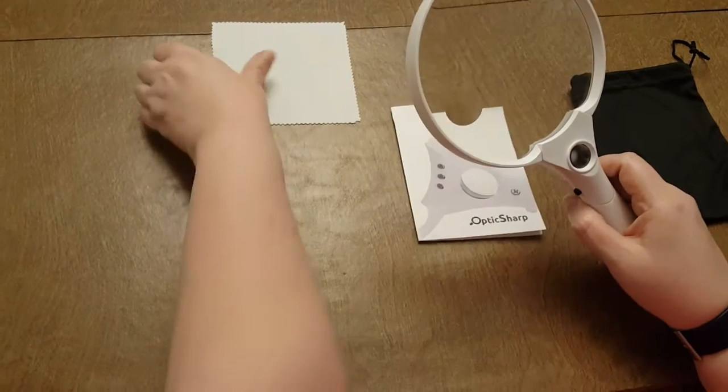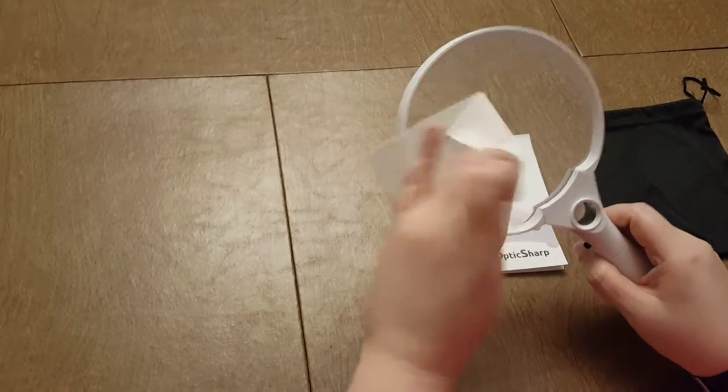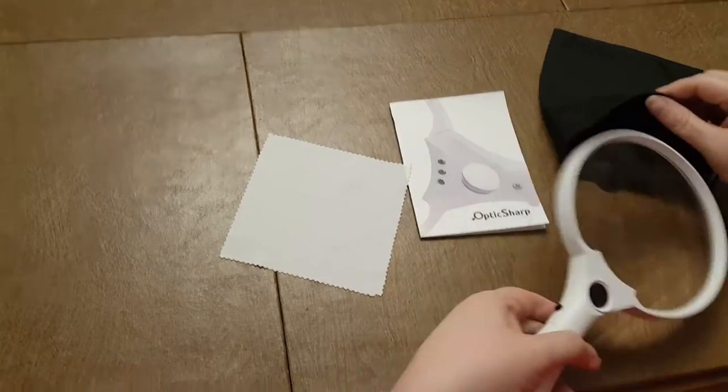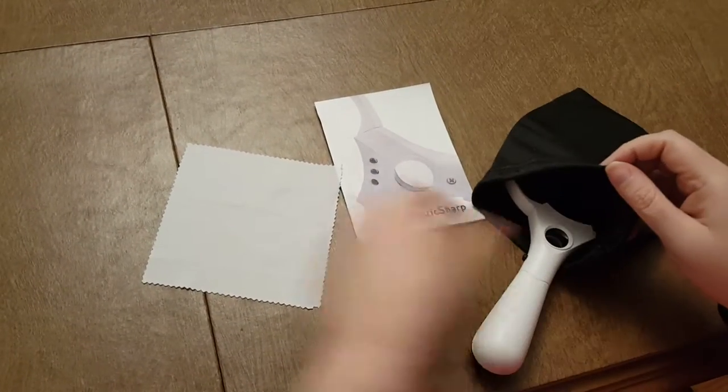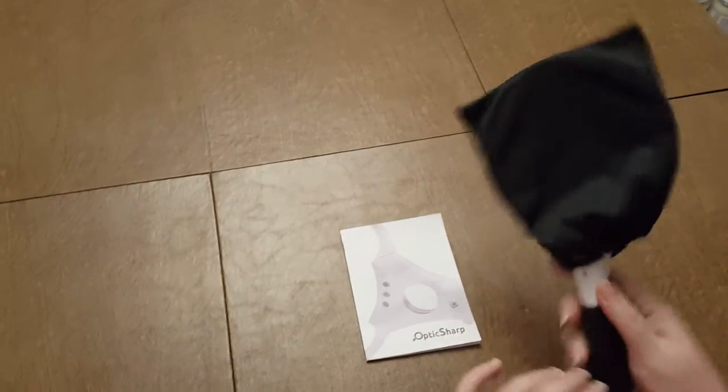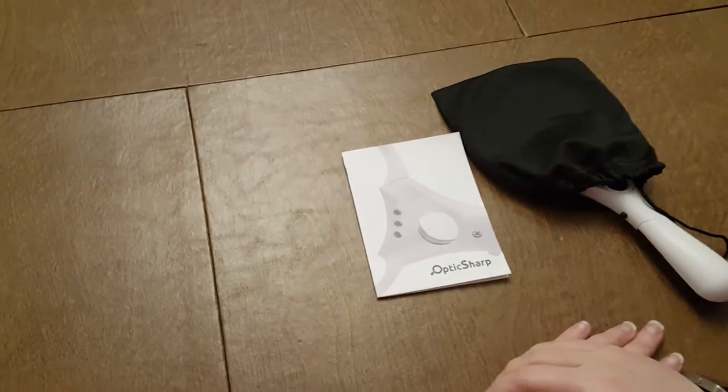This kit also comes with a cleaning cloth so you can keep your lens nice and clean. And a storage bag. So you can just slide it in, slide your cleaning cloth in, tighten it up, and put it away. It will keep it from getting dusty and keep it from getting smudged.